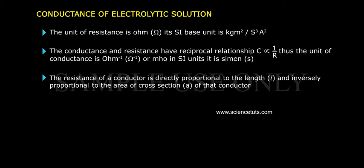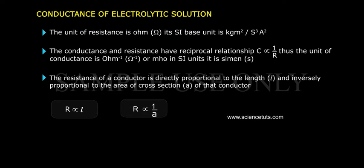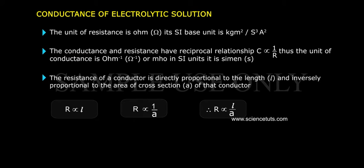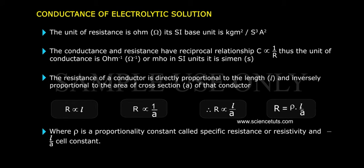The resistance of a conductor is directly proportional to its length L and inversely proportional to its area of cross-section A. Therefore R = ρ × (L/A), where ρ (rho) is a proportionality constant called specific resistance or resistivity, and L/A is called the cell constant.